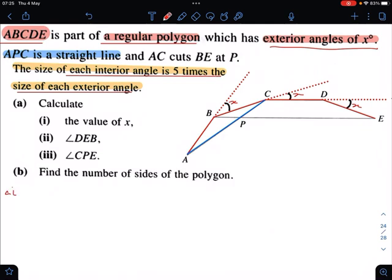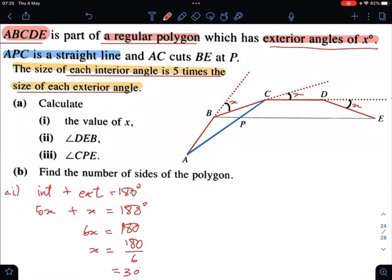It's very easy. Interior angle plus exterior angle equals 180 degrees. It's a straight line, right. So the interior angle is 5x, and the exterior angle is x, giving 180. So 6x equals 180, which means x is 180 divided by 6, giving you 30 degrees.